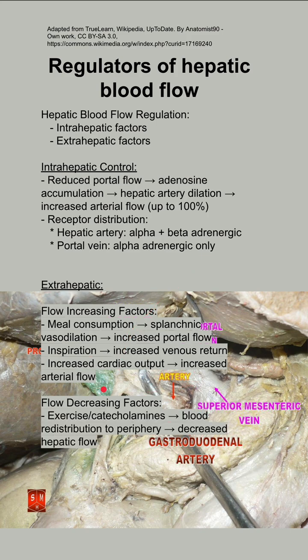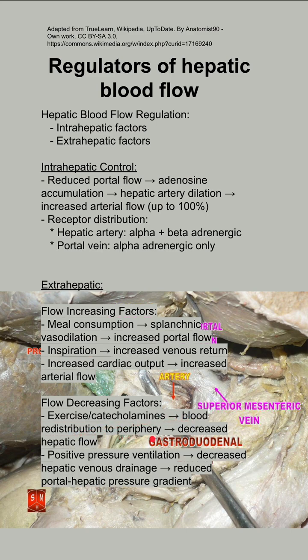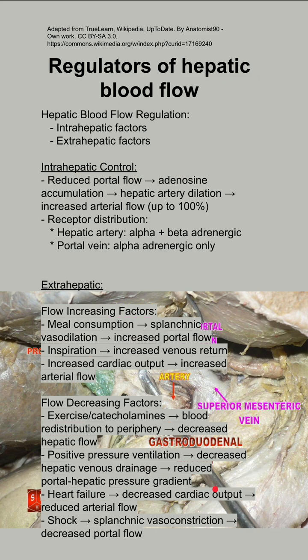Extra-hepatic factors that decrease flow include exercise and catecholamines, which produce blood redistribution to the periphery and decrease hepatic flow. Positive pressure ventilation, such as in an intubated patient, can decrease hepatic venous drainage, which reduces the portal hepatic pressure gradient. Heart failure would decrease cardiac output and reduce arterial flow.